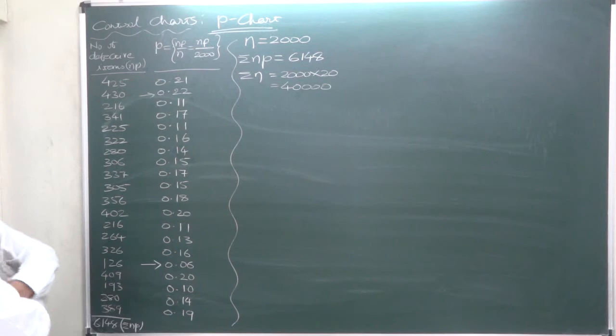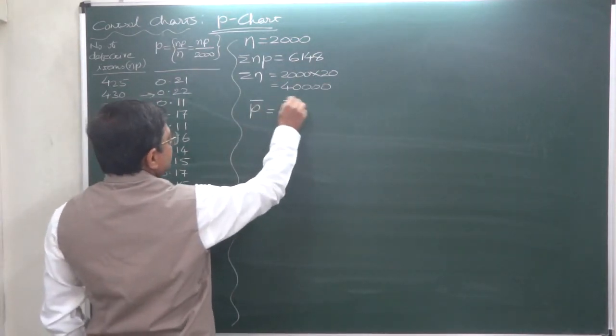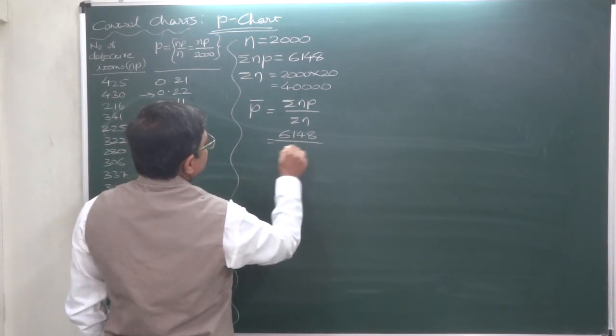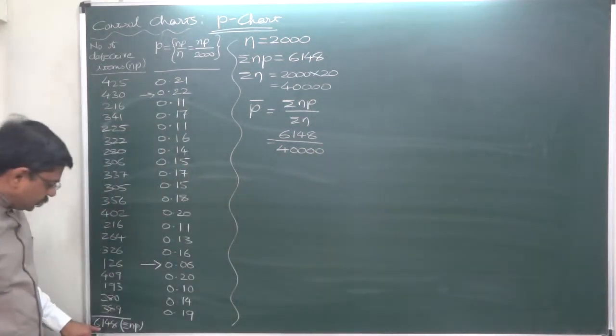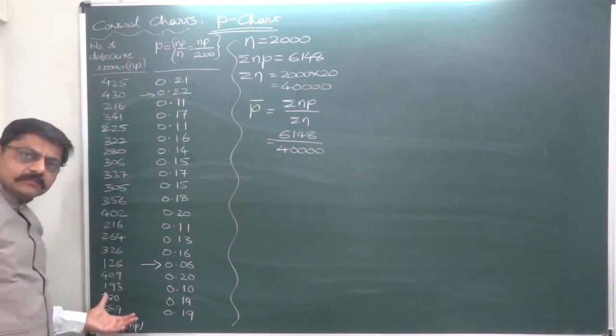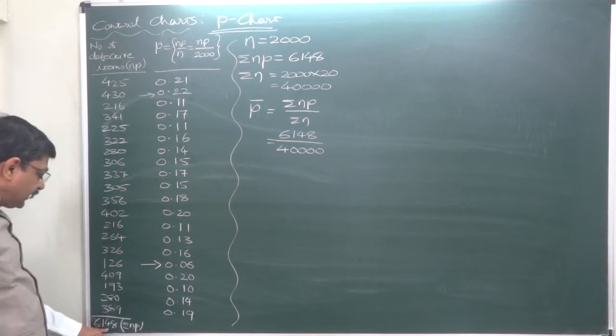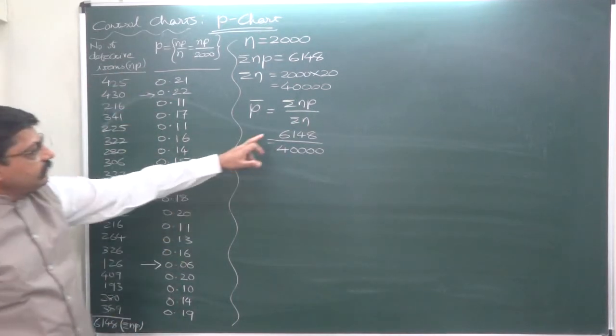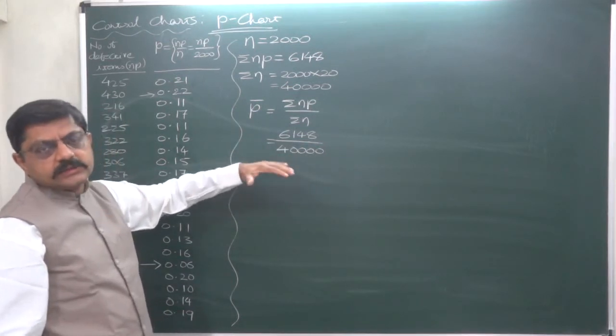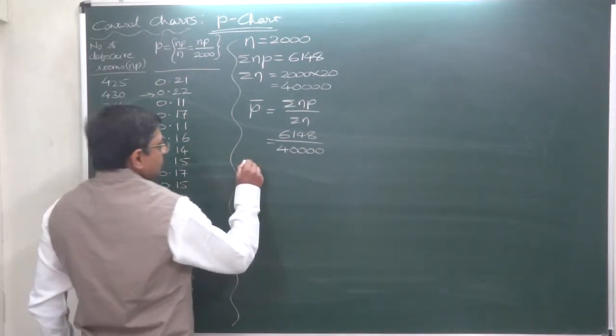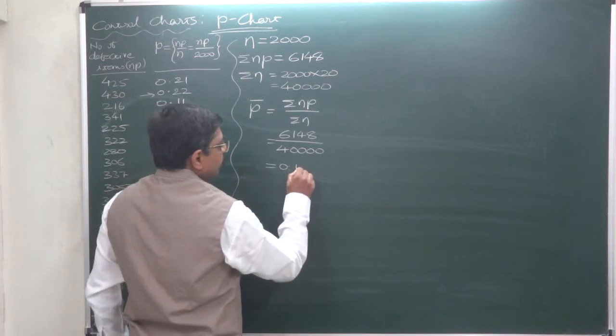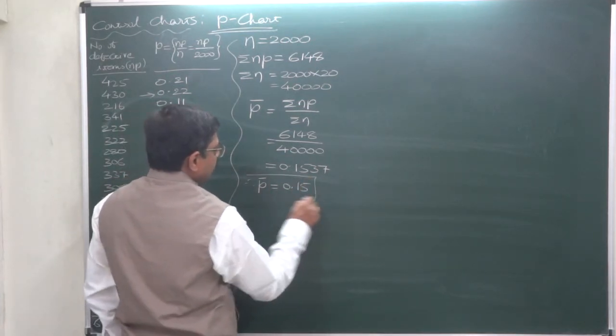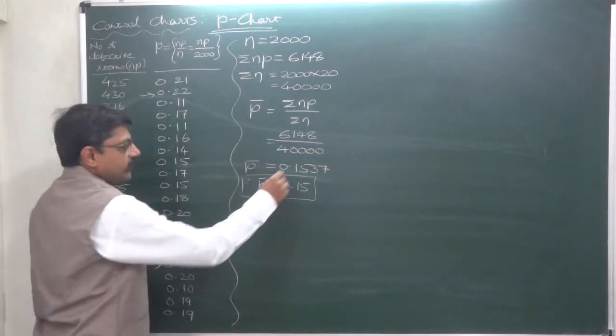Now, first of all, let's calculate mean of the proportions, P bar. The shortcut formula is Sigma NP divided by Sigma N. That is 6148 divided by 40,000. The interpretation: out of 40,000 items in all 20 samples, total 6148 are defectives. So, on average, in this whole project, 6148 items are defectives out of 40,000 items under inspection. So it comes to 0.1537. That means at final stage we shall take P equals to 0.15, rather P bar. But in calculations, we shall take P bar equals to 0.1537.